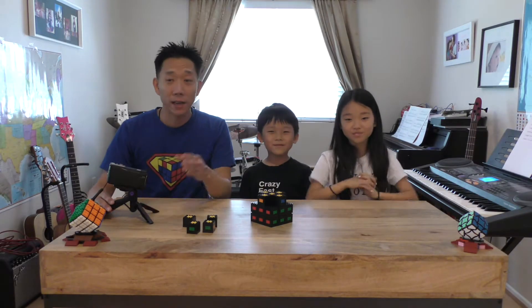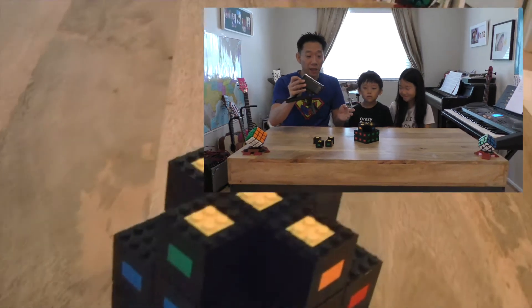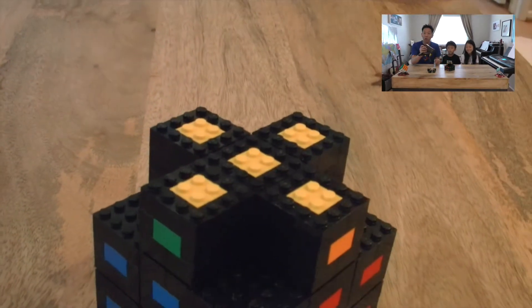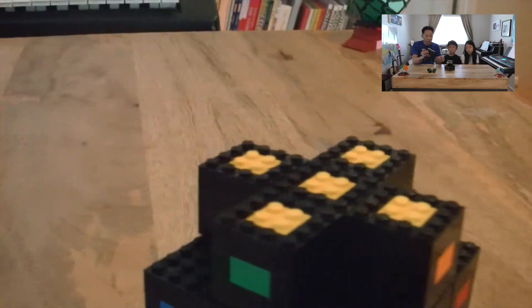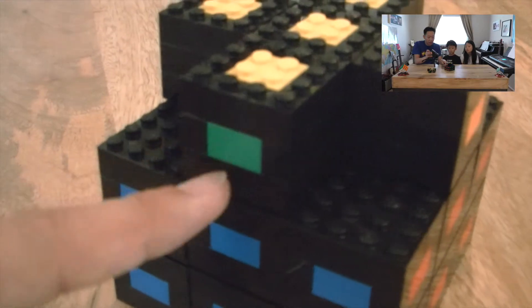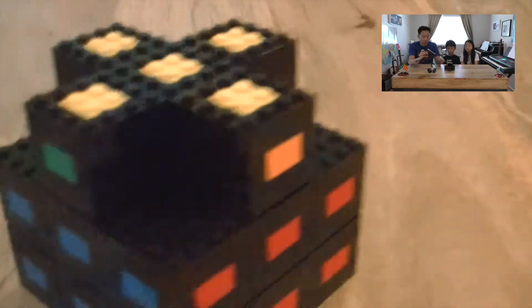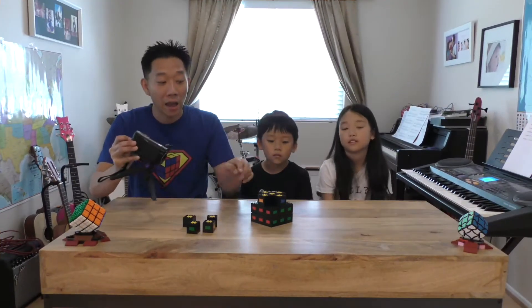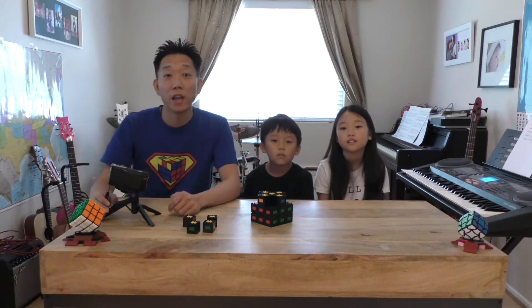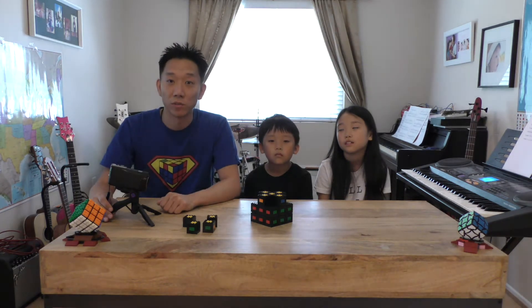Hi, so right now your cube should look like this. There should be a yellow cross at the top that we just made, but some of the pieces on the edge of the yellow cross may not be matching the centerpiece. It may not be matching the side it's meant to be on. So in this lesson we're going to learn how to switch edge pieces so that the yellow cross sits perfectly on top of the cube.